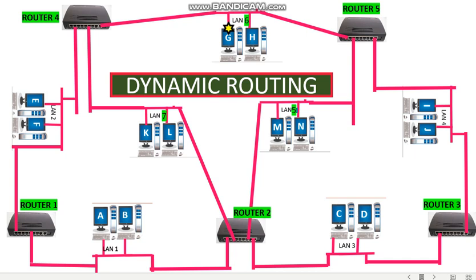Some key points about dynamic routing: Dynamic routing is an automatic process and is used in large networks. All the packets do not travel through a predefined path; each packet may travel through a different route. So it is less secure. This covers routing and the two types of routing: static and dynamic.